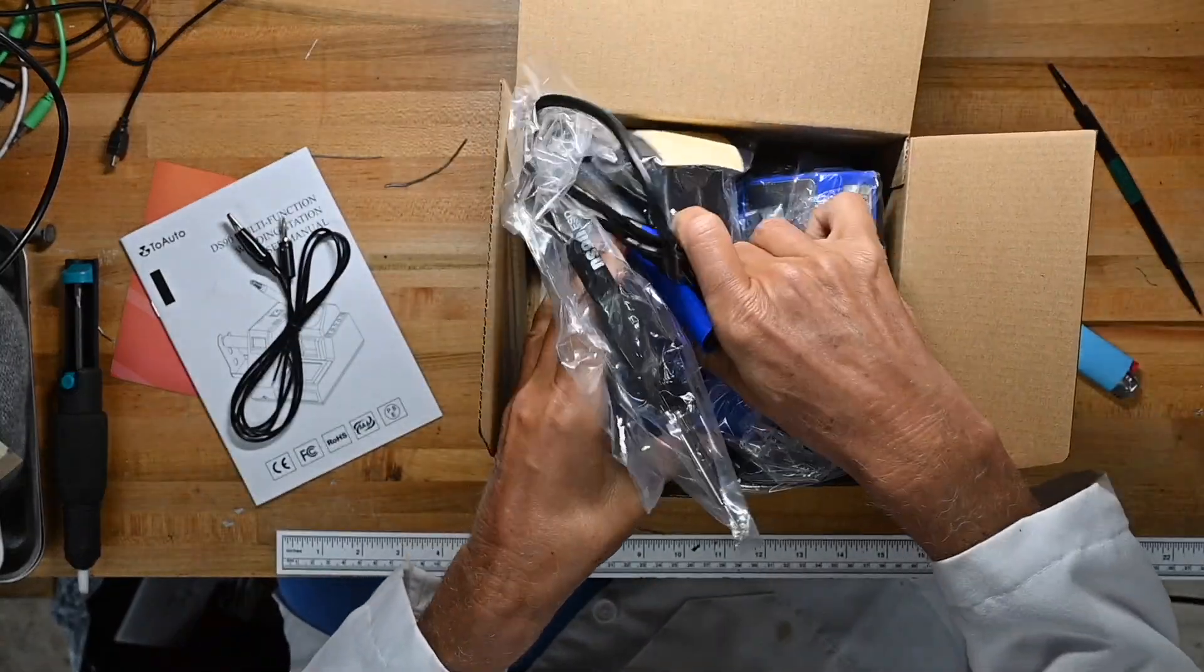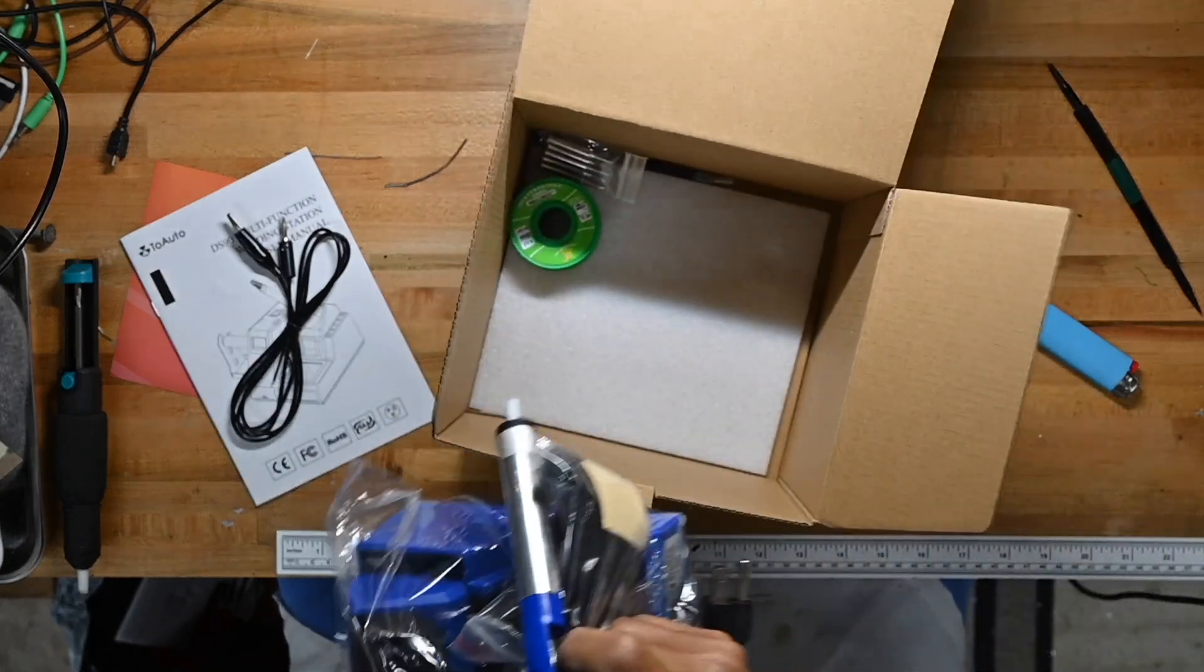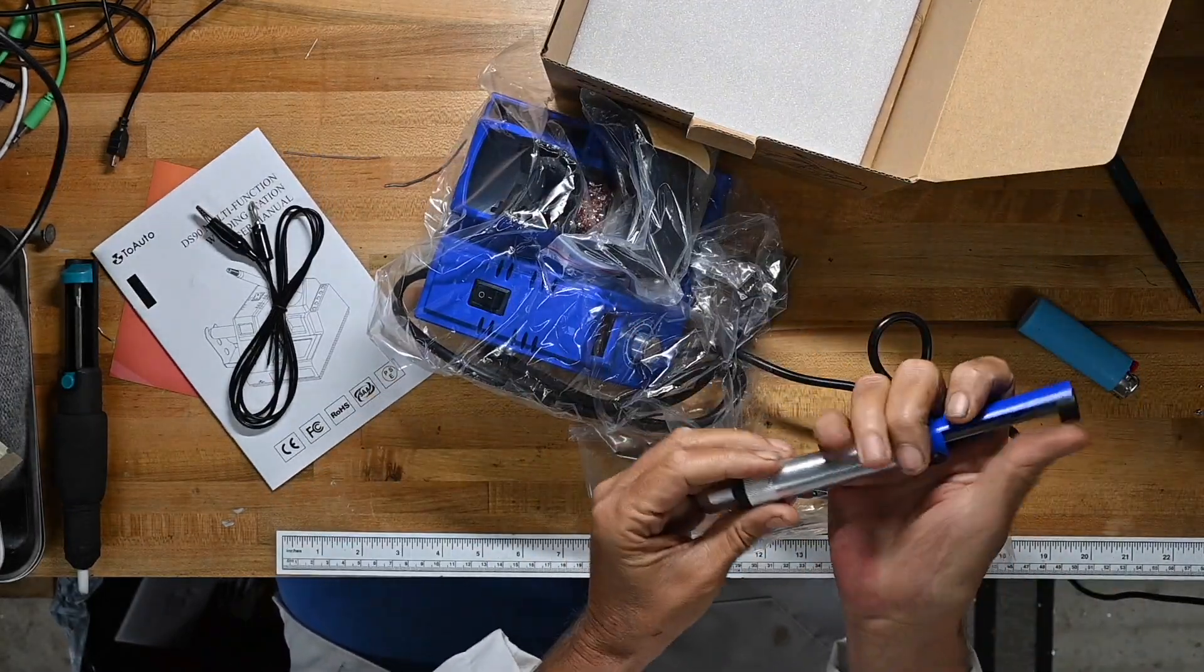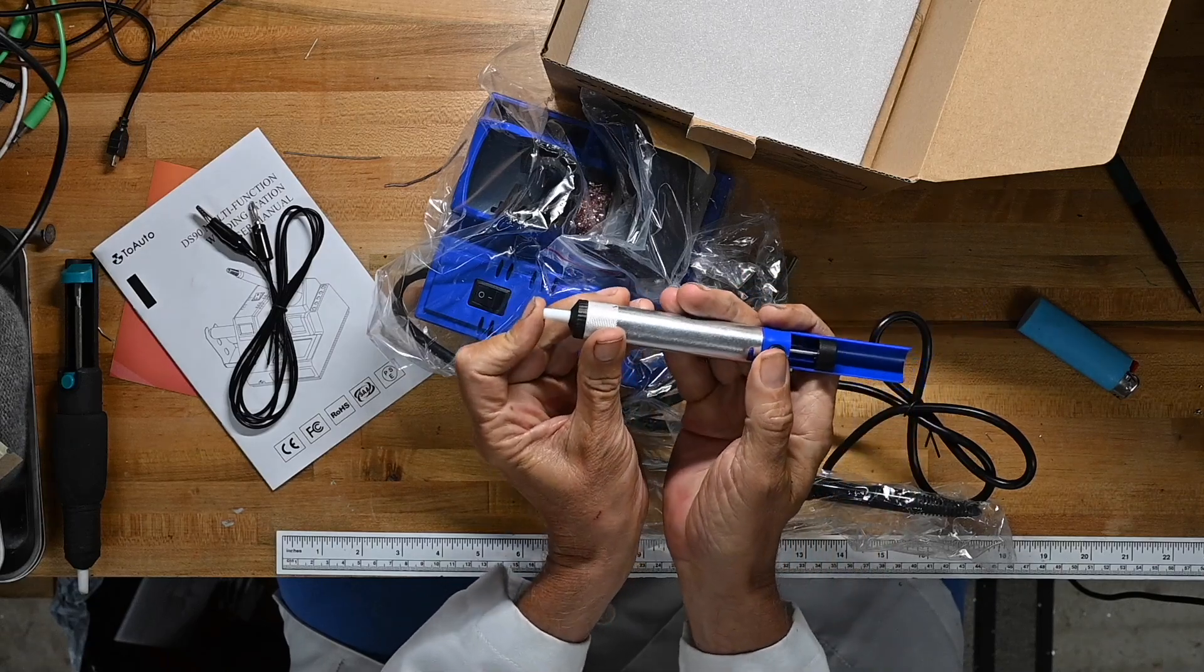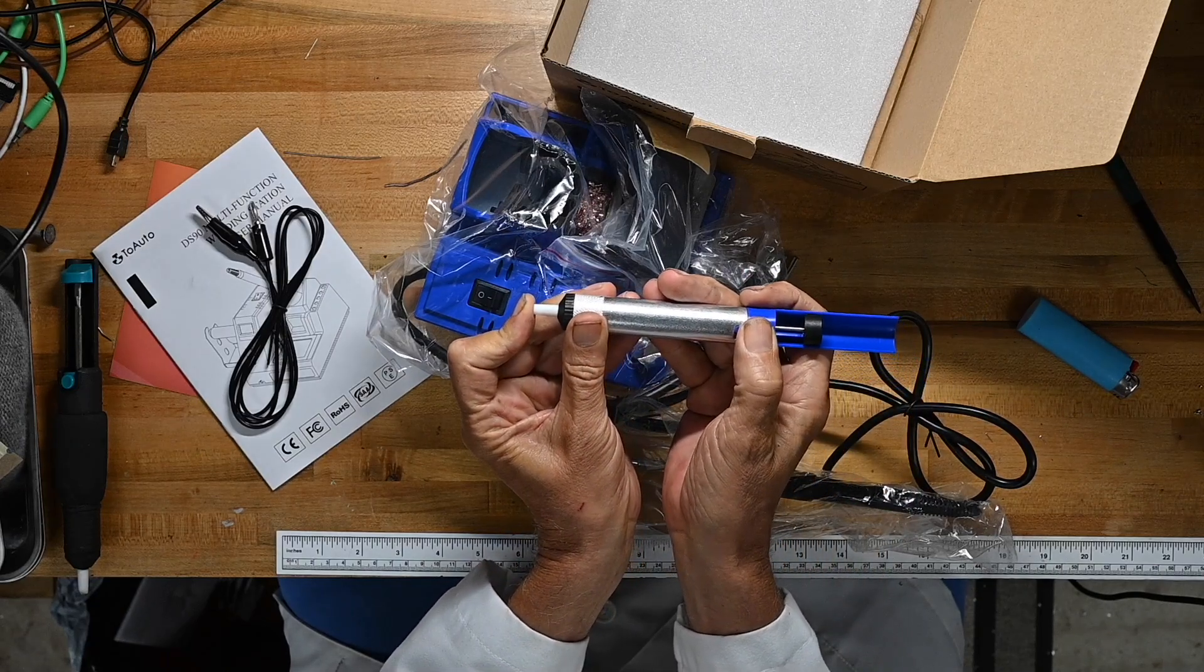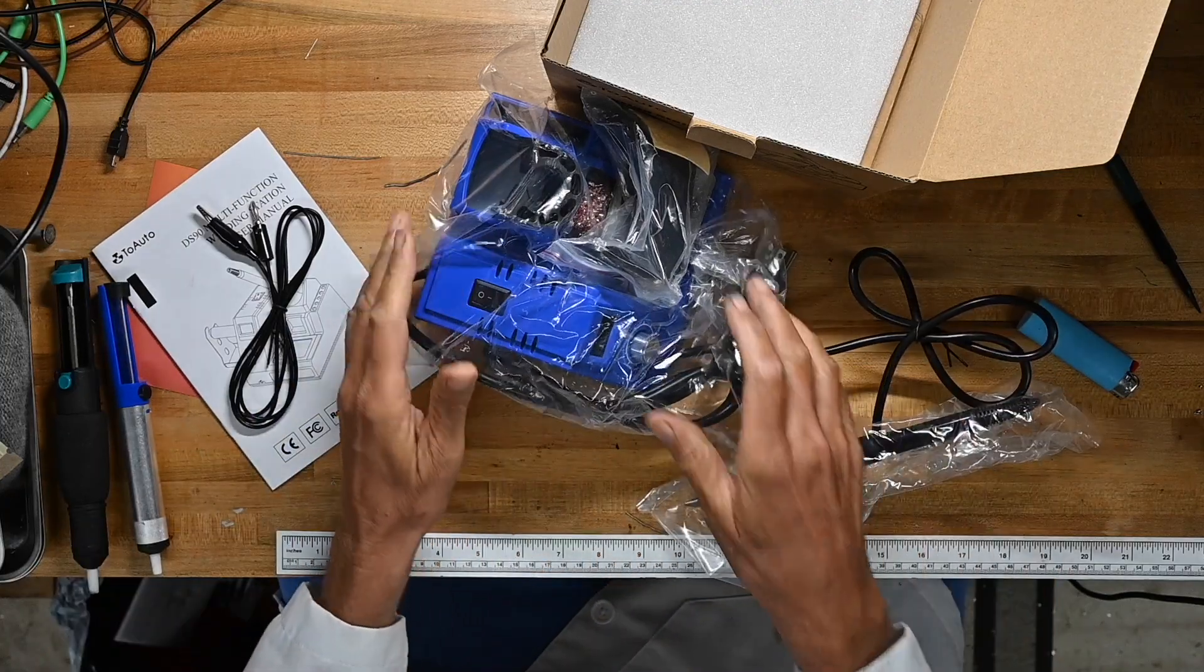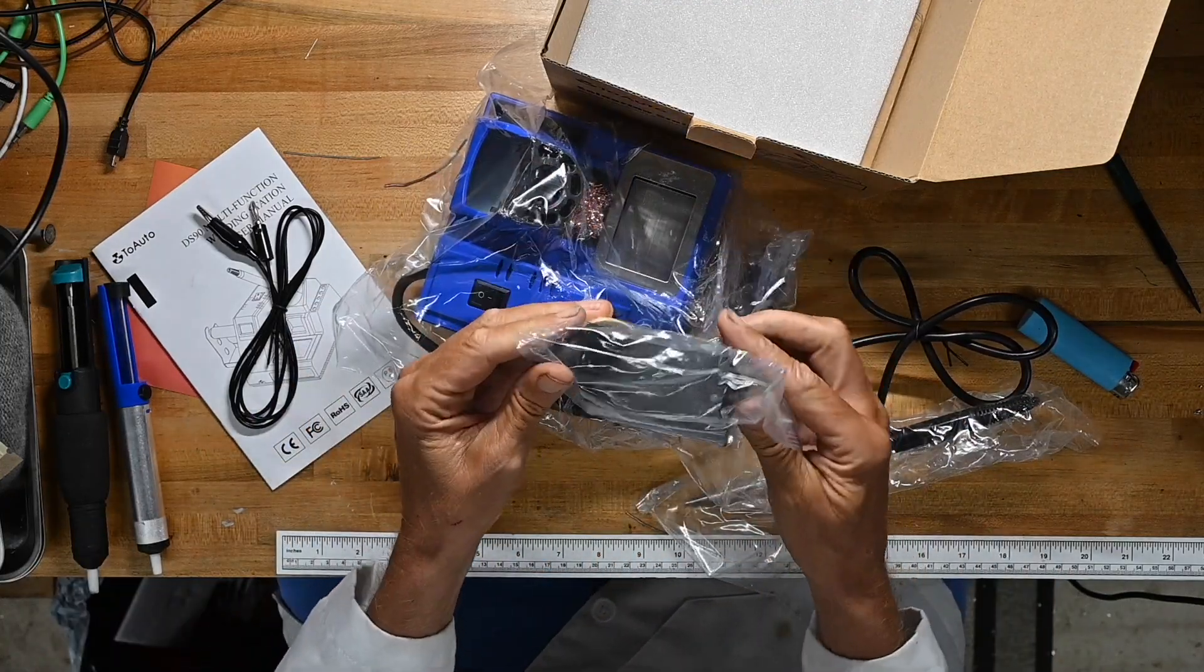Here's the soldering iron. Let me take the whole thing out because I don't think there's a whole bunch else in here. Got a solder sucker. See how it pulls a vacuum? It pulls a vacuum just fine. Probably not going to be my favorite one, but it's something.